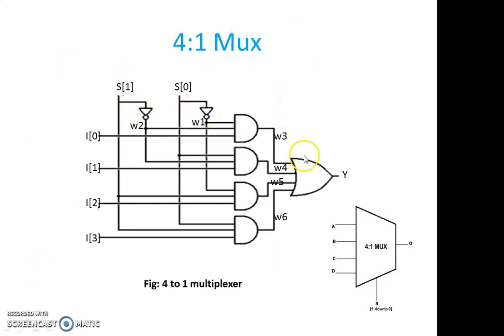Now let us, if you want to write gate level modeling for this structure, what all the things first we want to look for? First let us see how many gates are required in order to implement this 4 to 1 mux. 1, 2, 3, 4, 5, 6, 7, total 7 gates are required. Out of these gates, let us see how many NOT gates, 2 NOT gates are required, 4 AND gates are required, 1 OR gate is required.